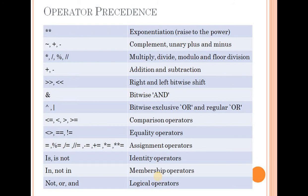The operator precedence table from highest to lowest priority is: first, exponentiation (power); then complements, unary plus and minus; next, arithmetic operators: multiply, division, modulus, floor division; then addition and subtraction; then right shift and left shift; then bitwise AND; then bitwise exclusive OR and regular OR; then comparison operators, equality operators, assignment operators, identity operators, and membership operators.